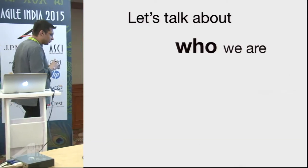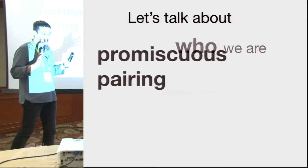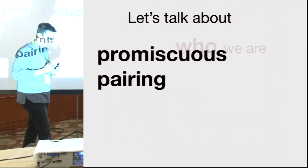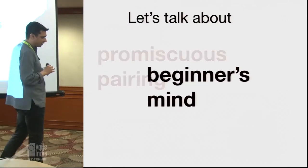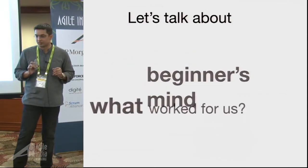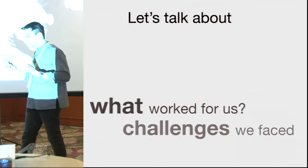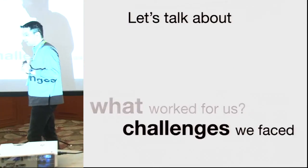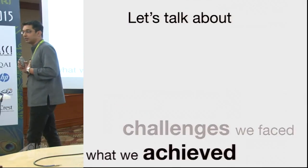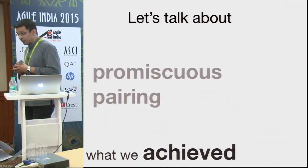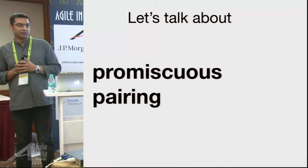Before I do that, let me quickly brief you about myself. I am Ankur, I am working with JP Morgan as an agile developer, and I have spent about 12 years in the industry across various product developments in the financial as well as telecom domains. In my current role I am an agile developer working with a cross-functional feature team.